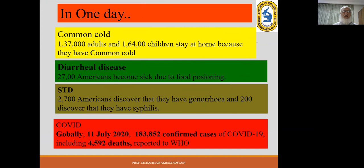In one day, 1 lakh 37,000 adults and 1 lakh 64,000 children stay home because of the common cold. Diarrheal disease: 27,000 Americans become sick due to food poisoning. For STDs, about 2,700 Americans discover they have gonorrhea. And globally, on 11th July, 1 lakh 83,000 confirmed cases of COVID-19 including 4,592 deaths — this is the WHO report.